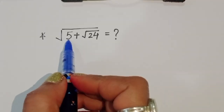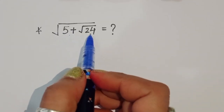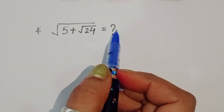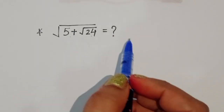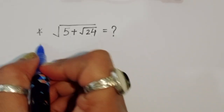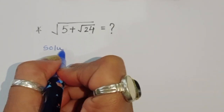The question is: given square root of 5 plus square root of 24, find the value of this expression. Let's see the solution.